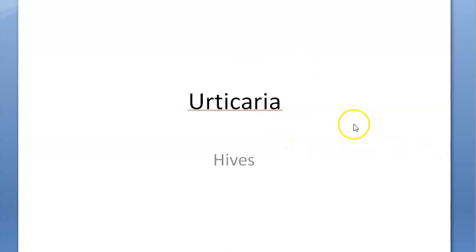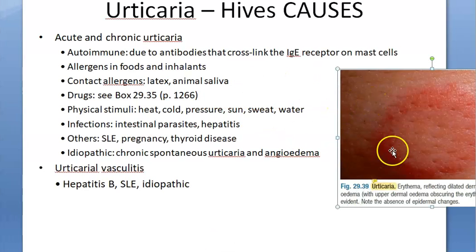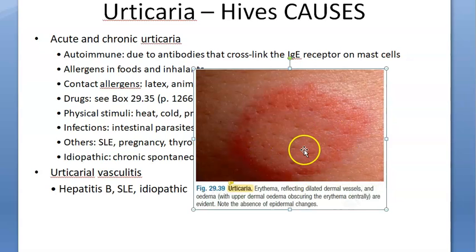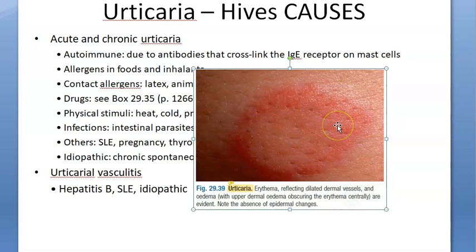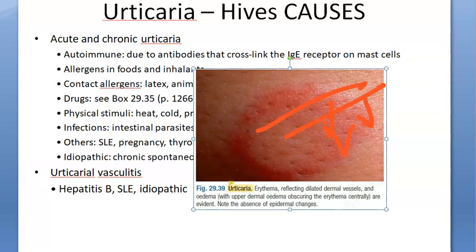In this video let us look at urticaria or hives. It is a localized dermal edema — there is some edema here, localized to the skin. This happens because there is increased capillary permeability. The blood vessels are all having increased permeability. This is a temporary thing, and you can see some edema here.